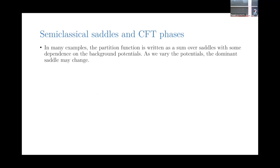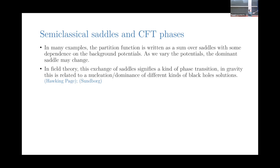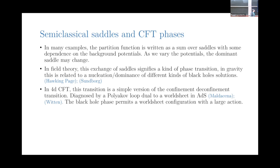A lot of work has been done since 2016 for four-dimensional gauge theory. The partition functions will be written as a sum over saddles with some dependence on the background potentials. As we vary these potentials — which could be the temperature or the chemical potentials — the dominant saddle might change. In field theory, this exchange of saddles signifies a kind of phase transition. In gravity, this is related to the nucleation or dominance of different kinds of black hole solutions. In Euclidean signature, there'll be families of black hole solutions that might contribute, leading to a complicated phase structure.